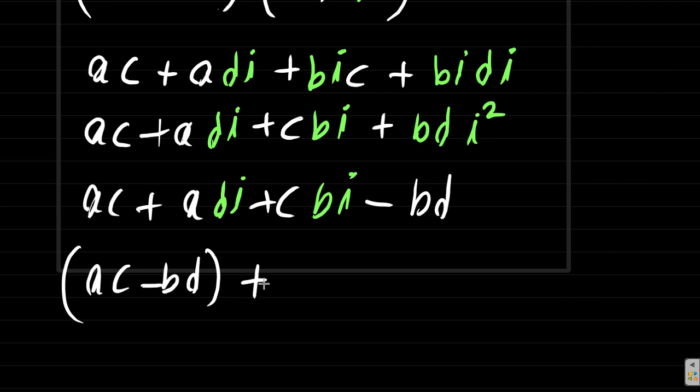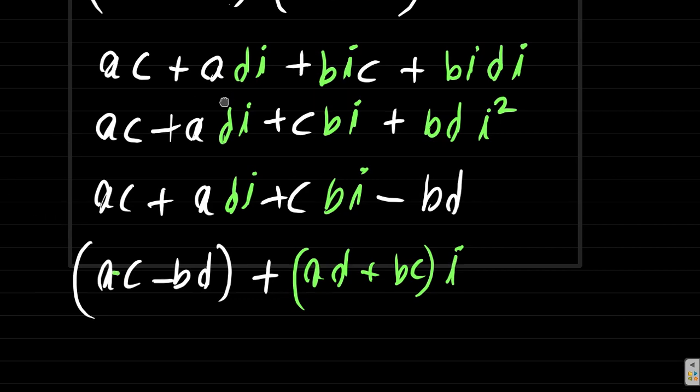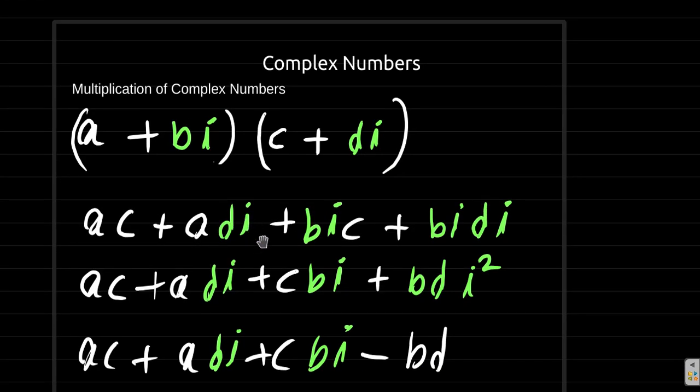Plus, then if we factorize here, we're going to have ad plus bc times i for the imaginary part. So that's what we have. Remember, you multiply out these two complex numbers just like how you had multiplied out two binomials in brackets.